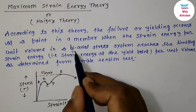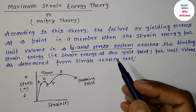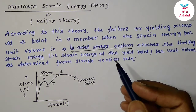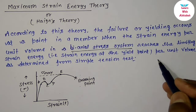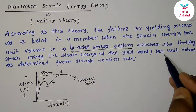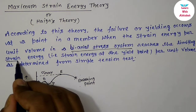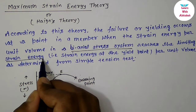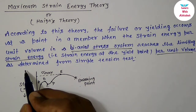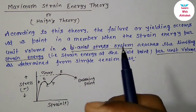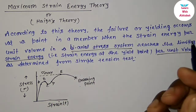Here, biaxial stress system means there are two stress systems. And strain energy per unit volume is the energy stored per unit volume in the material.